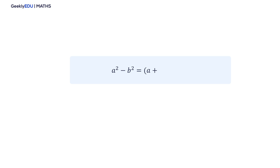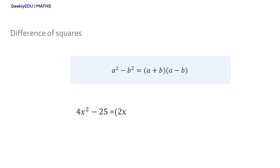When you have a squared minus b squared, you can factorize this expression by multiplying the first term plus the second and the first term minus the second. This formula is called the difference of squares. For example, 4x squared minus 25 can be written as 2x squared minus 5 squared, and substituting into the formula we get 2x plus 5 multiplied by 2x minus 5.